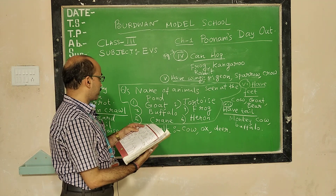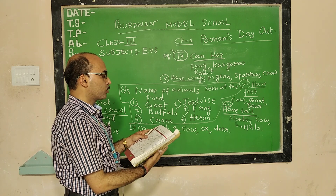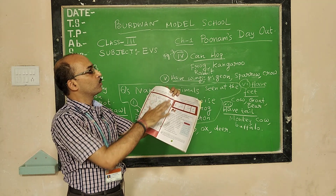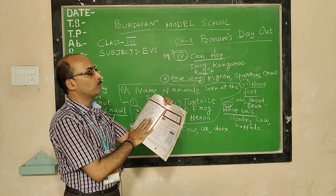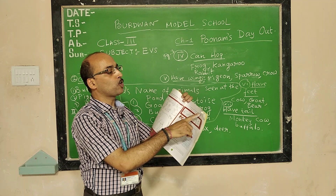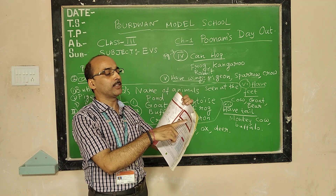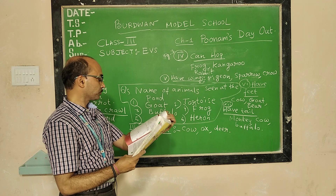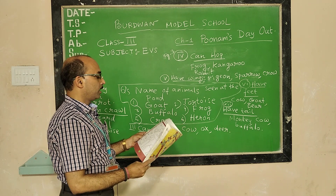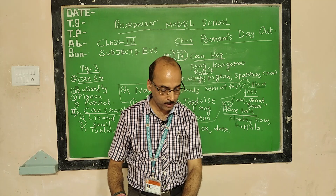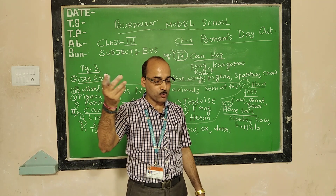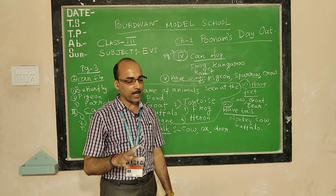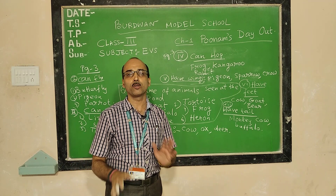Turn to the next page. Look at the pictures given below and color the animals that do not live in your house — you will do this at home. Then on page number 5, here are some incomplete pictures of animals — complete them and write their names below. So we have seen Poonam's Day Out and many animals. Revise this and do the homework of coloring for page numbers 4 and 5. Thank you for your class.